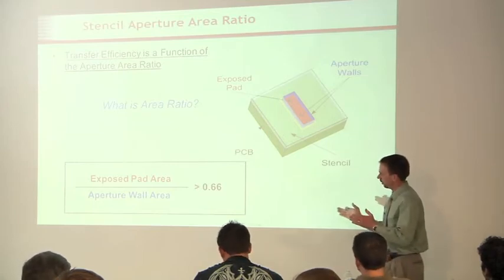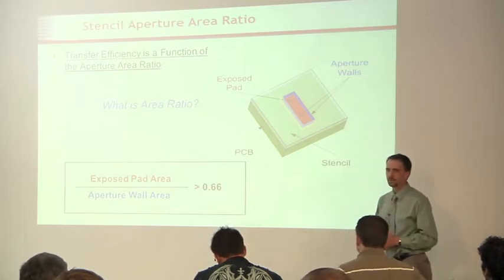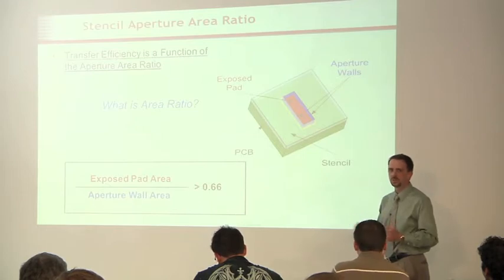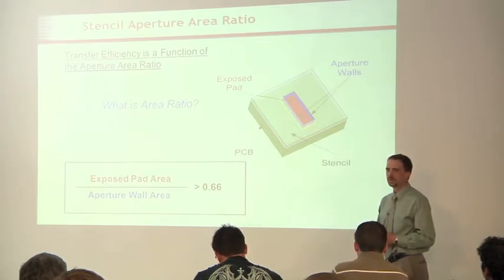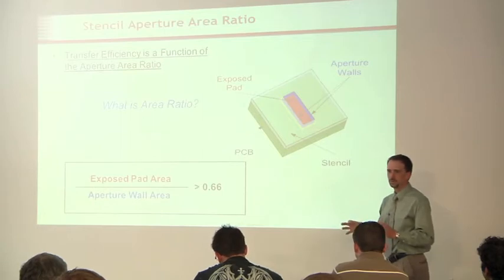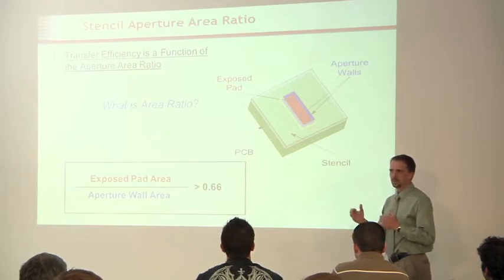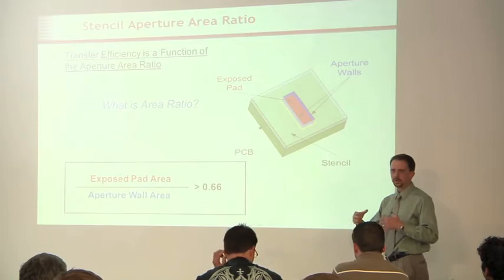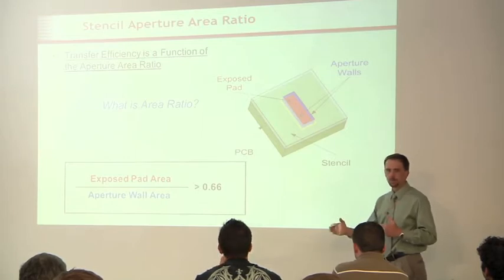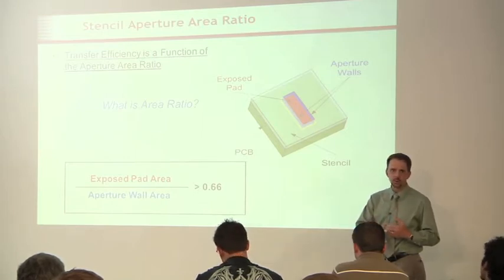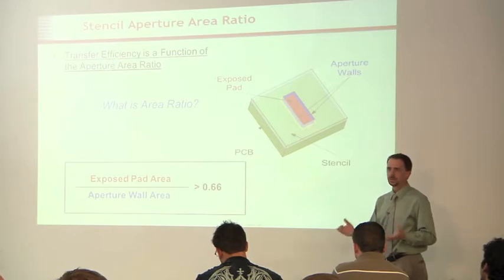Historically, we can go down to about that .66 ratio without too much issue. Once you get below that, it really starts to become, you kind of start to lose a little bit of control over the process. And that's sort of the arena that we're playing in right now, trying to figure out, when we hit that .66 area ratio and go below, how do we consistently print? Because it is going to happen.